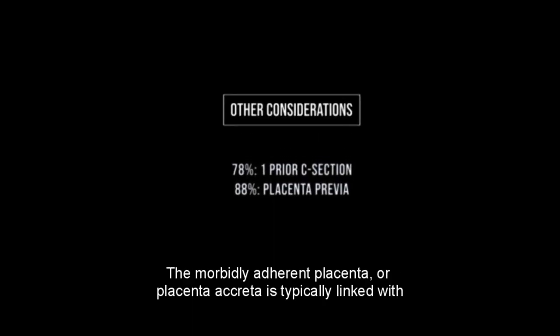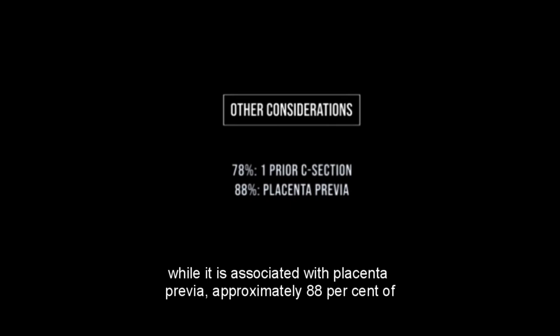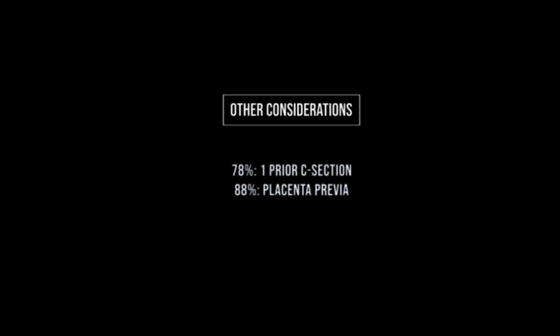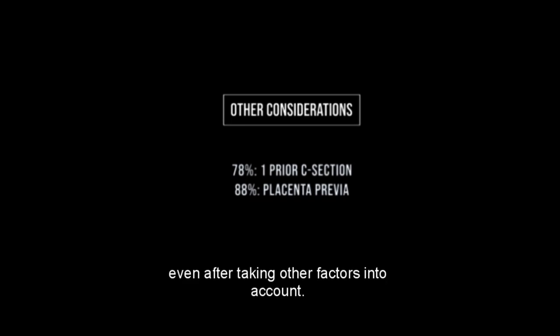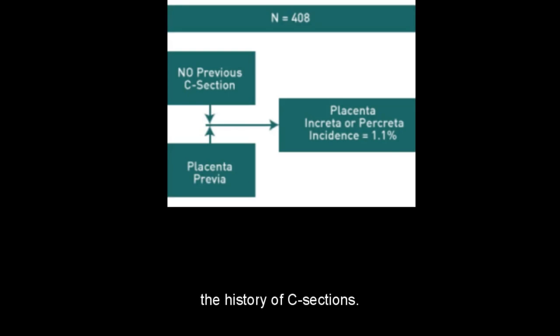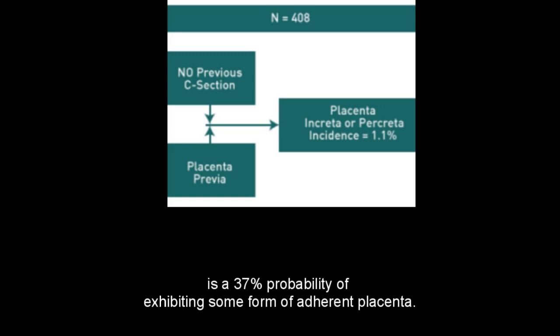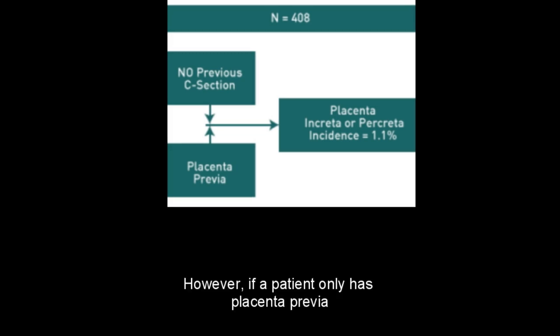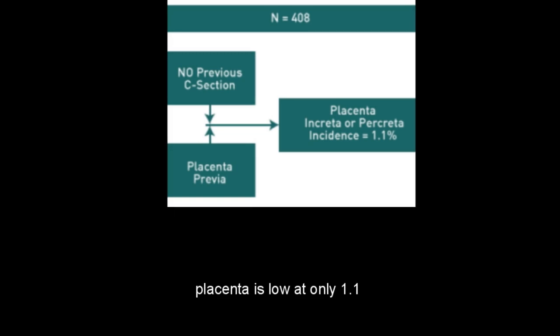The morbidly adherent placenta is typically linked with a prior cesarean birth around 78% of the time, while it is associated with placenta previa approximately 88% of the time. The risk of placenta accreta is higher in patients who have complete placenta previa, even after taking other factors into account. In summary, the chances of having a morbidly adherent placenta depend on the history of C-sections. If a patient had both a previous C-section and placenta previa, there is a 37% probability of exhibiting some form of adherent placenta. However, if a patient only has placenta previa and no previous C-section, the likelihood is only 1.1%.